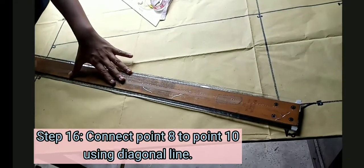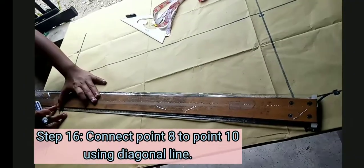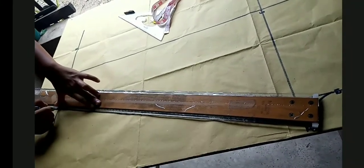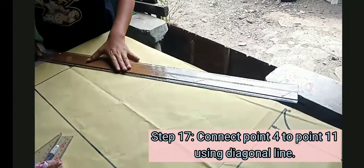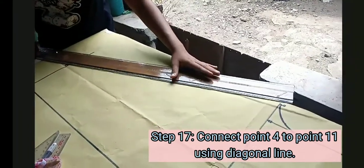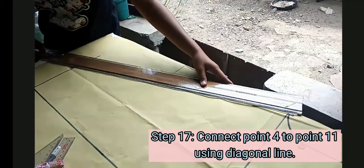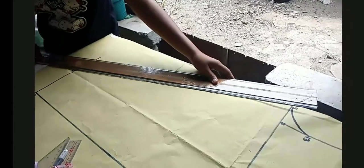Connect point 8 to point 10 using diagonal line with the help of T-square. Connect also point 4 to point 11 using diagonal line and also with the help of T-square.